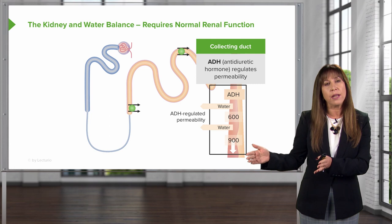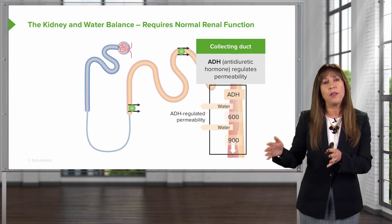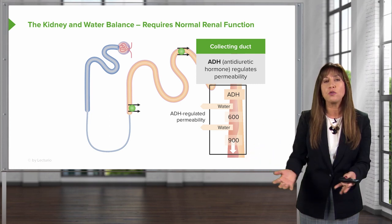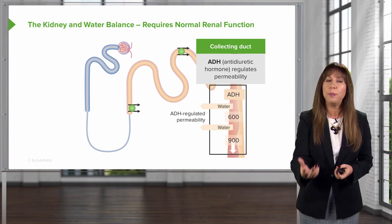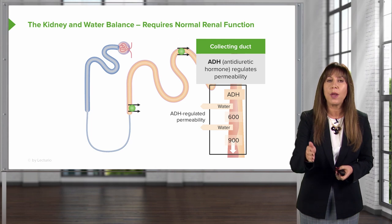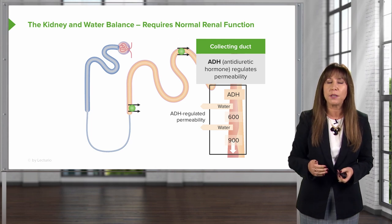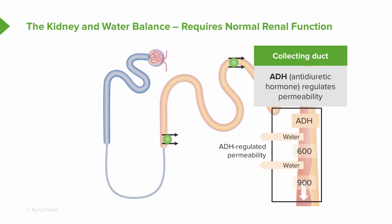Once we get to the collecting duct, the ultimate concentration of urine is really going to be determined by whether or not we have ADH present. ADH stands for antidiuretic hormone — it's also termed vasopressin. We'll be talking more about that in some slides to come.